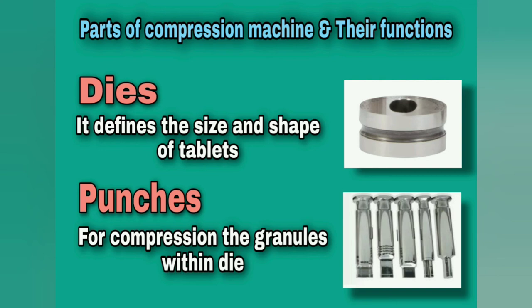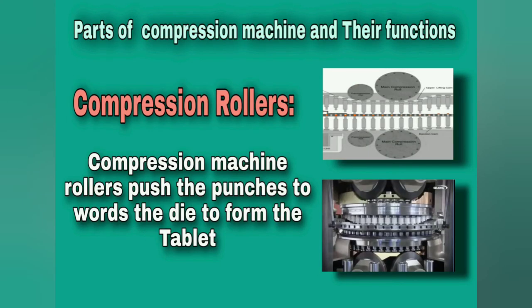Punches. Punches are used for compressing the granules within the die. Compression rollers. In the compression machine, compression rollers are used for pushing the punches.